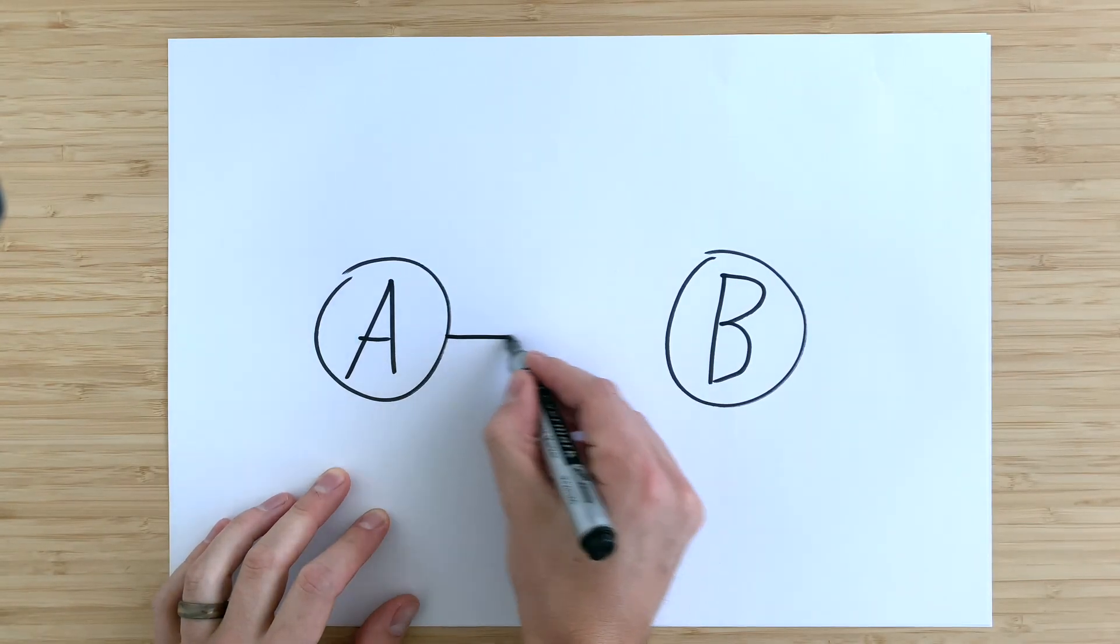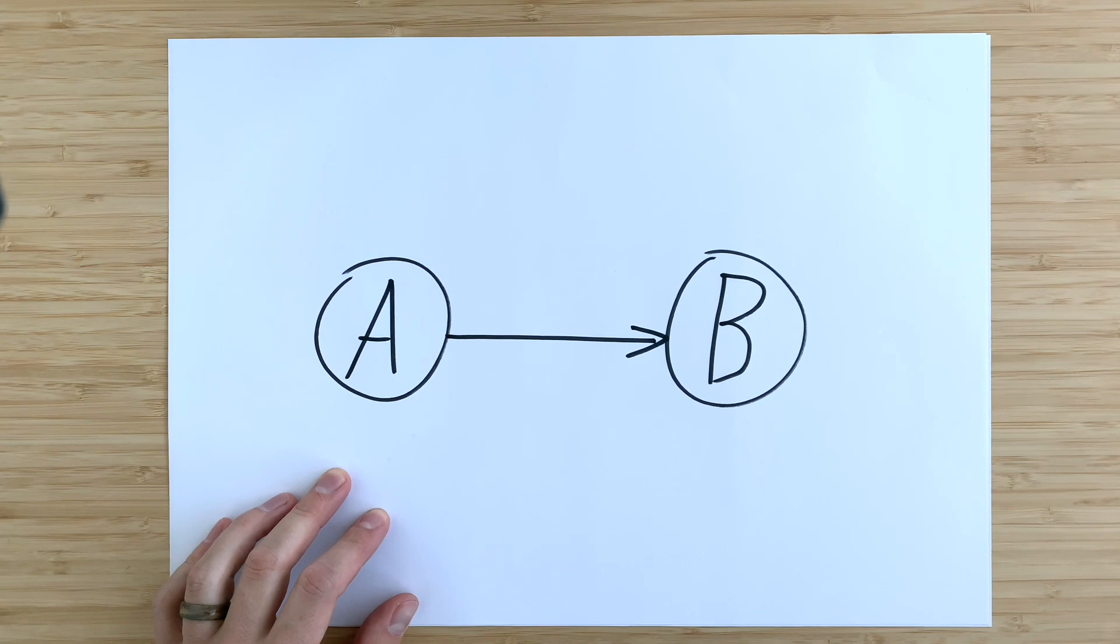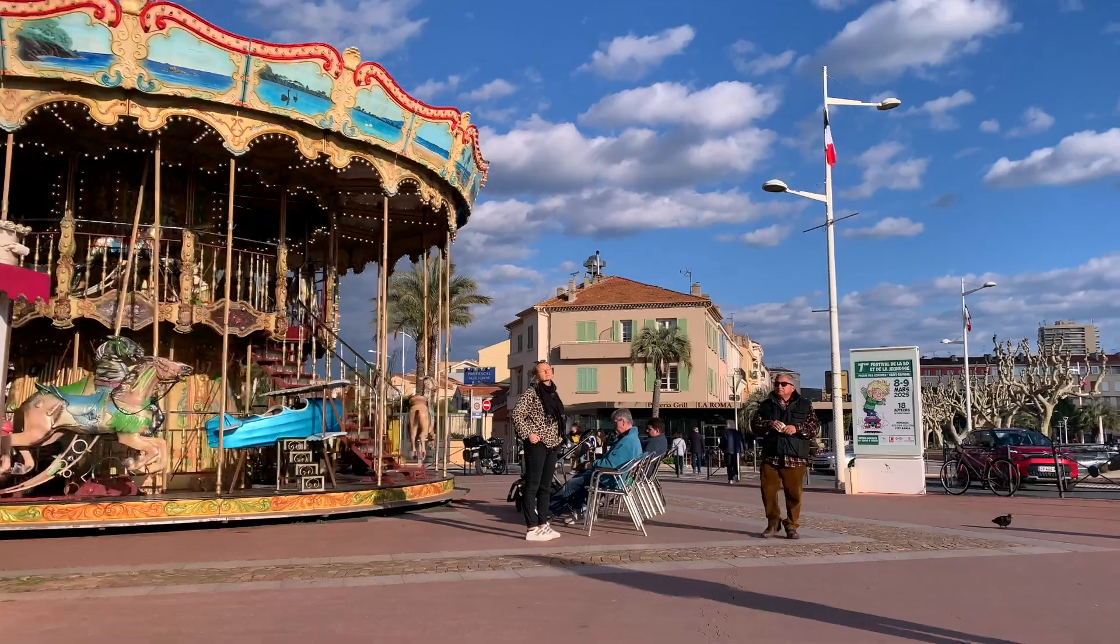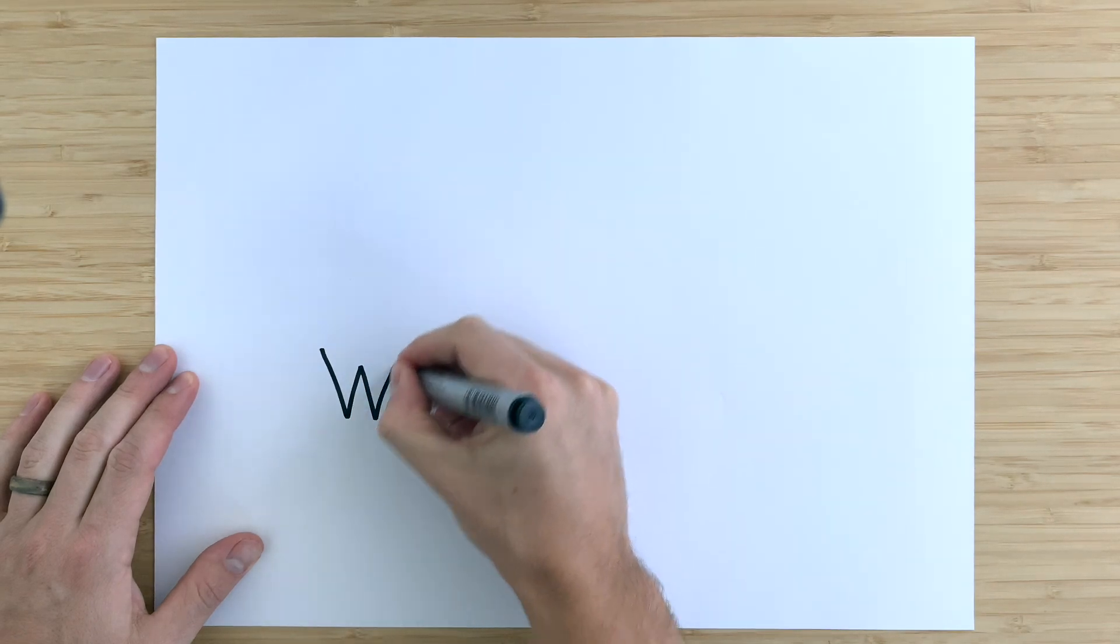An arrow means that A is causing B. There are three building blocks that can occur in such a diagram and I feel like they have changed the way that I view the world a bit. The first one is a mediator. A mediator modifies an effect.